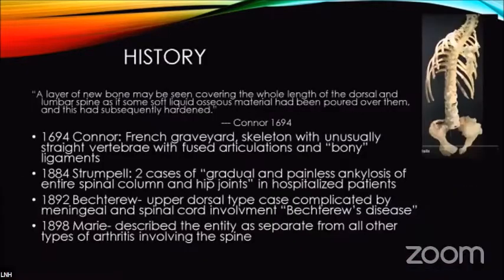It's an old disease, first described in 1694 by a French graveyard worker who described it as if a layer of material had been poured all over the skeleton and then solidified. In 1884 Strümpell defined two clinical cases of ankylosing spondylitis, and in 1892 Vestru defined meningeal and spinal cord involvement, which later came to be known as Vestru's disease.